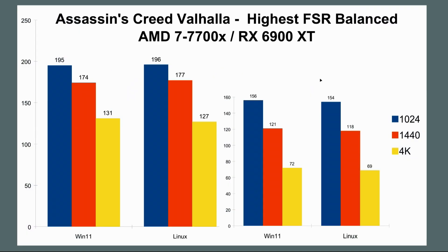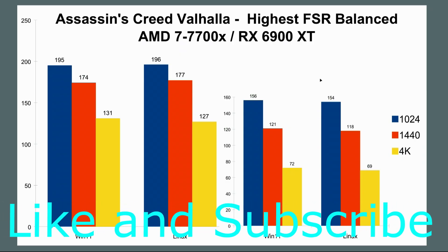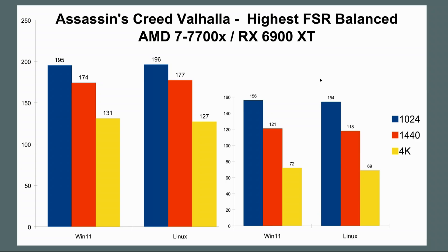With FSR balanced on the left and raw gameplay on the right, you're going to notice we almost got to 200 frames per second in our 1080p results. At 2K the results are practically even, just like without FSR. But the big thing I noticed is how significant the gains were running 4K with FSR balanced — both Windows and Linux. I was pretty impressed with that. Now I want to show you the 1% lows when running in FSR balanced mode — and these 1% low results are also typical without FSR.